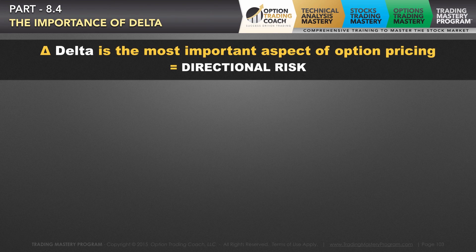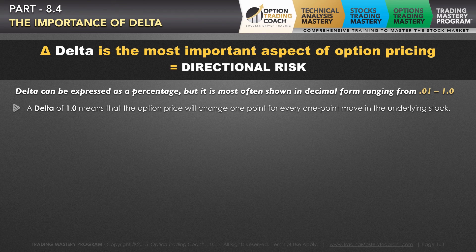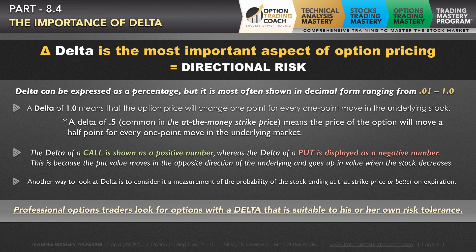Delta is the first option Greek you're going to learn and the most important aspect of option pricing, because this is the metric that really measures your directional risk on a trade. Positive delta means you're long shares; negative delta means you're short shares. In option trading terms, being bullish translates to long deltas, and being bearish means you have negative deltas. Delta can be expressed as a percentage but is most often shown in decimal form ranging from .01 to 1.0. A delta of 1.0 means the option price will change one point for every one point move in the underlying stock. The delta of a call option is shown as a positive number, while the delta of a purchased put is displayed as a negative number. Professional option traders look for options with a delta that is suitable to their own risk tolerance — also known as your delta comfort zone.